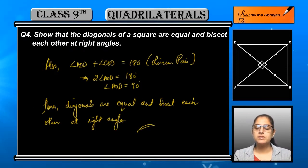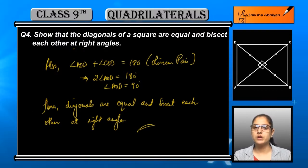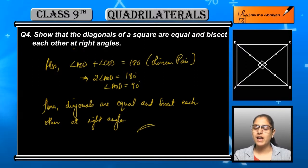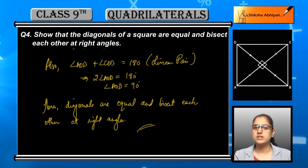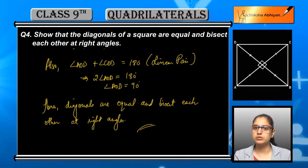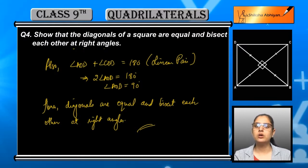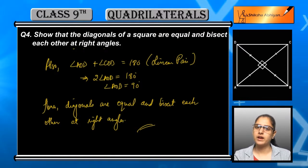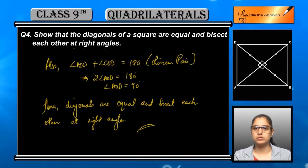So we have seen three things: first, the diagonals are equal — proved. After that, the diagonals bisect each other — proved. And the last thing is angle AOD is equal to 90 degrees, so the diagonals bisect each other at right angles also. All three parts of the proof are complete.